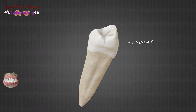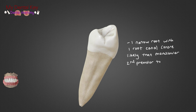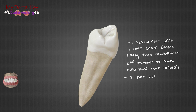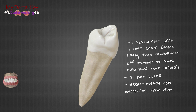This tooth has the most narrow root. It typically has one canal, but between this tooth and the mandibular second premolar, this tooth is more likely to have a second canal. This tooth also has two pulp horns, and much like its cusps, the buccal pulp horn is much larger than its lingual pulp horn. Also remember that there is a deep developmental depression on the mesial surface of the root.